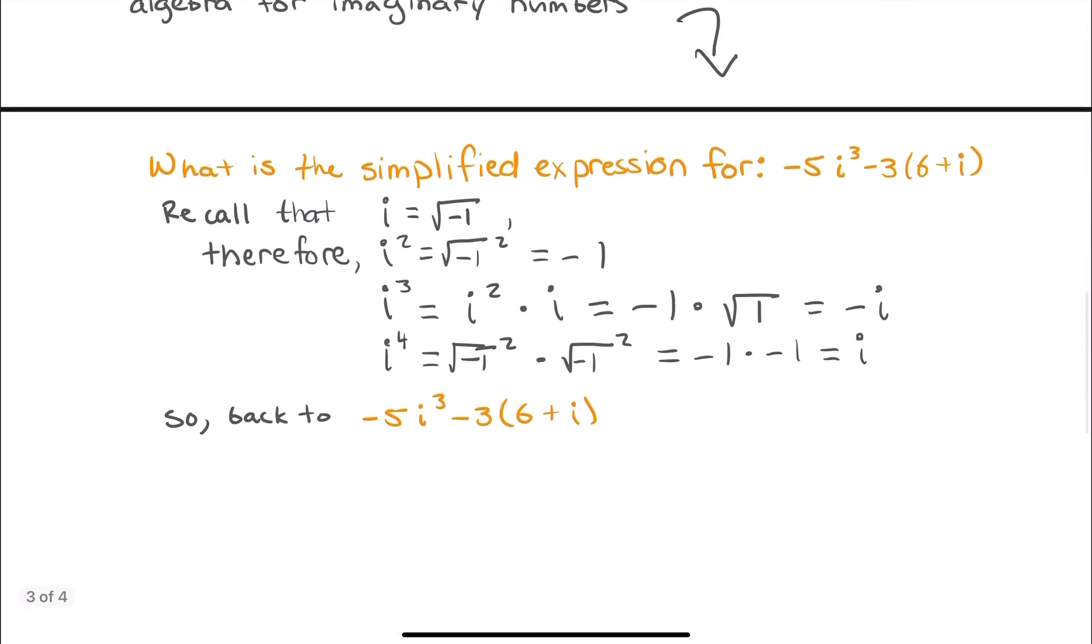So I still have the problem kind of here on the top of the page, but I need you to recall that i is actually defined as the square root of negative 1. So in that case, if I was to consider the quantity i squared, that would actually be the square root of negative 1 squared. And hopefully you know that when you try to square something that you're taking the square root of, that basically cancels out, and all you get is what's underneath the radical.